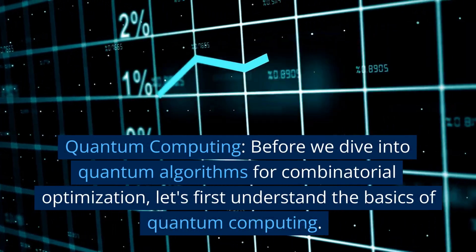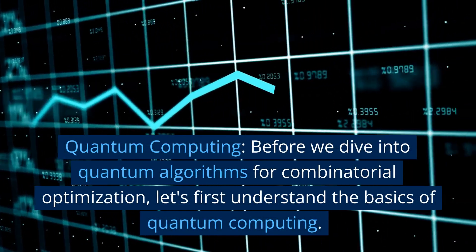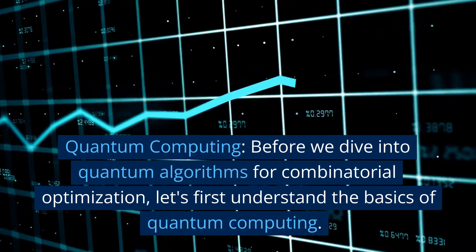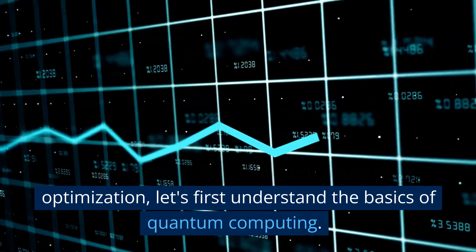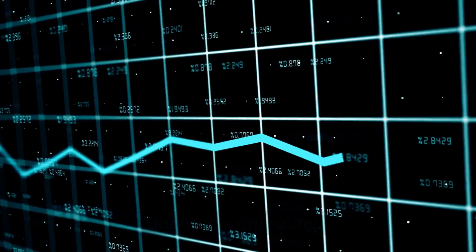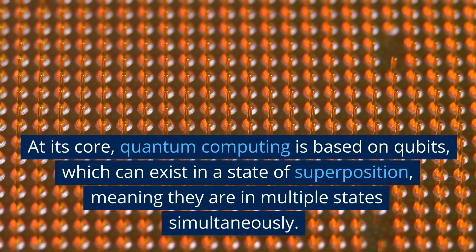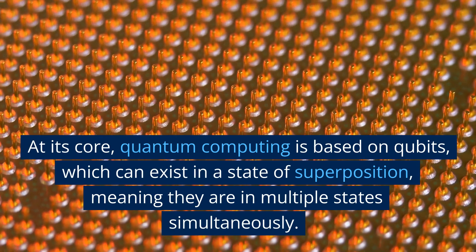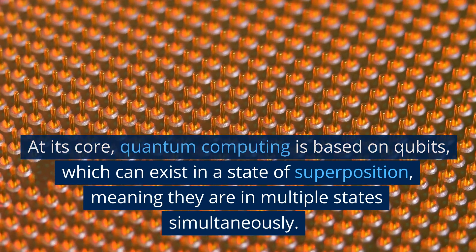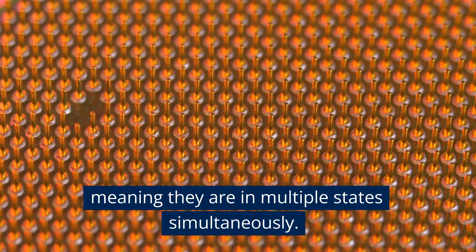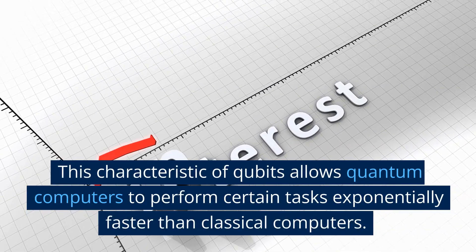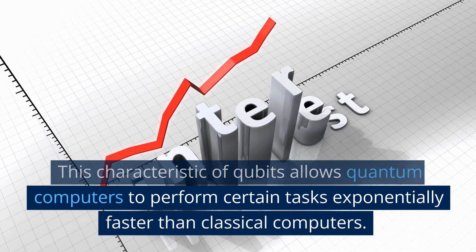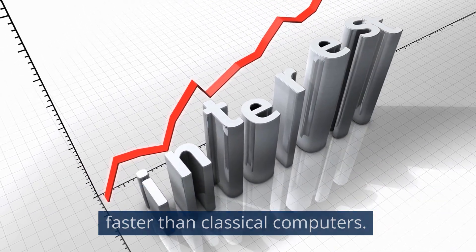Quantum computing. Before we dive into quantum algorithms for combinatorial optimization, let's first understand the basics of quantum computing. At its core, quantum computing is based on qubits, which can exist in a state of superposition, meaning they are in multiple states simultaneously. This characteristic of qubits allows quantum computers to perform certain tasks exponentially faster than classical computers.